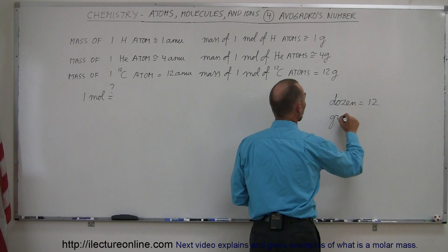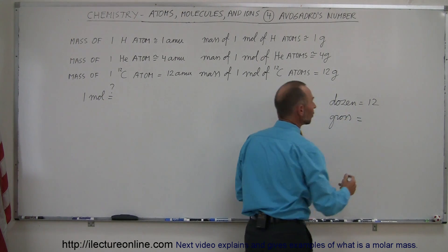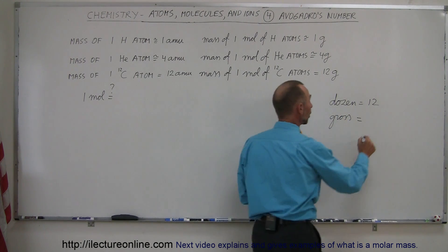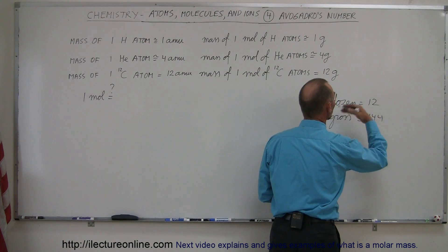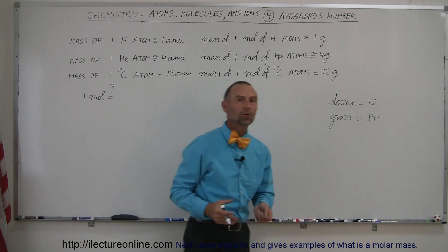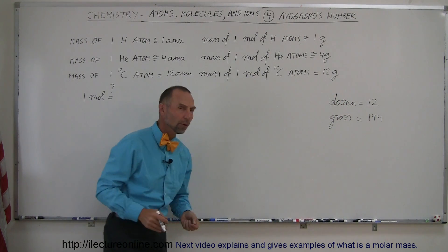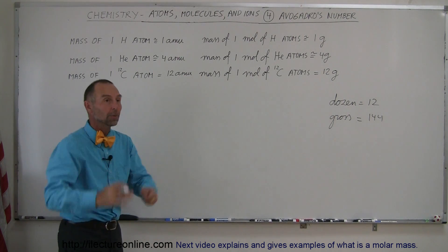What is a gross? A gross is a dozen dozen, so that means 12 times 12, or 144. So we use the word dozen to represent 12, we use gross to represent 144, and we use a mole to represent a really big number.